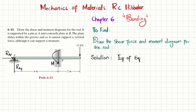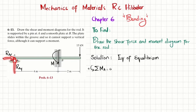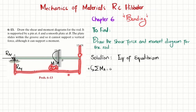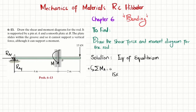The first equation of equilibrium we apply is: the sum of all moments about point A equals zero, taking counterclockwise as positive. About point A, the two reaction forces at A pass through it and produce no moment. The first moment is 15 kilonewtons multiplied by the perpendicular distance of 6 meters — this is clockwise, so it is negative. The second moment is the reaction moment M from plate B, which is counterclockwise, so it is positive. This gives: −15 × 6 + M = 0.